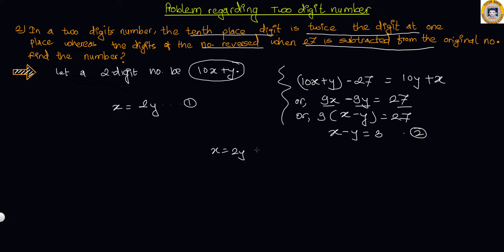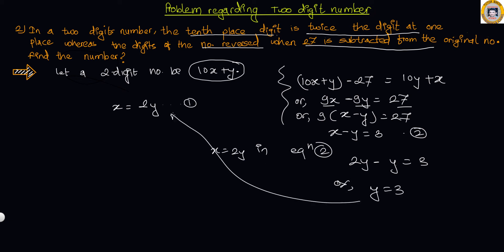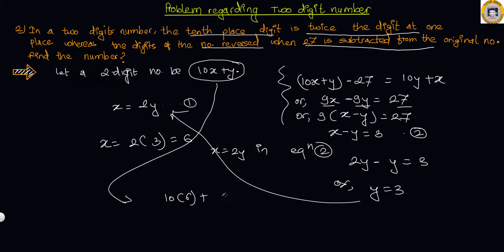Now substituting X equals 2Y into equation 2: 2Y minus Y equals 3, so Y equals 3. Substituting Y equals 3 back, X equals 2 times 3 equals 6. The required number is 10X plus Y equals 10 times 6 plus 3 equals 60 plus 3 equals 63, which is our required two-digit number.